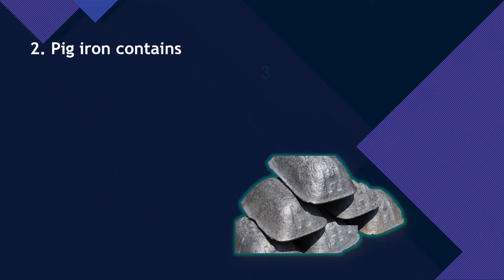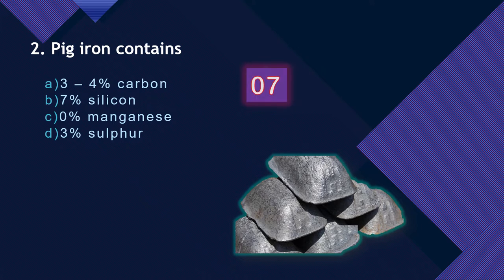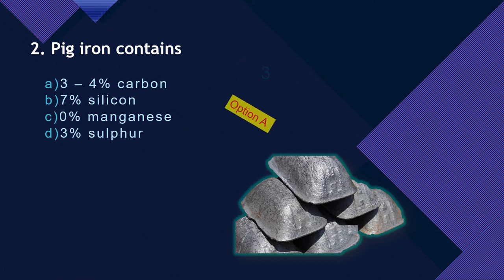Question 2: Pig iron contains — which chemical composition is correct? Option A: 3 to 4% carbon. Option B: 7% silicon. Option C: 0% manganese. Option D: 3% sulfur. Pig iron contains carbon, silicon, manganese, and sulfur, but the percentages vary. The correct option is Option A — pig iron contains 3 to 4% carbon.